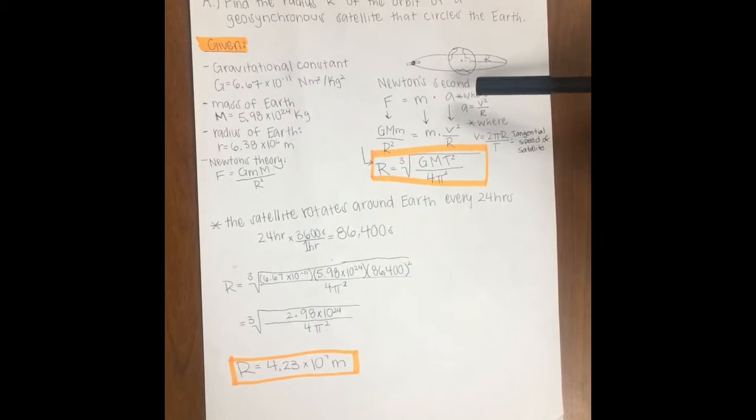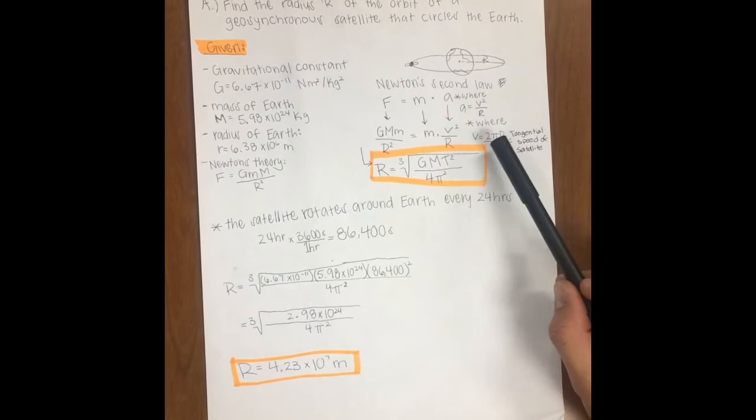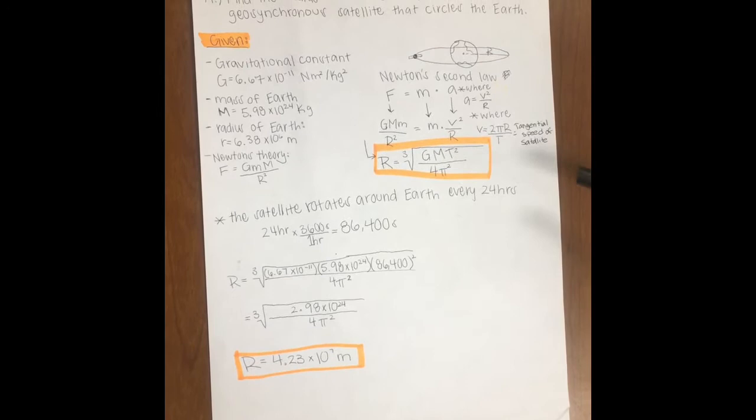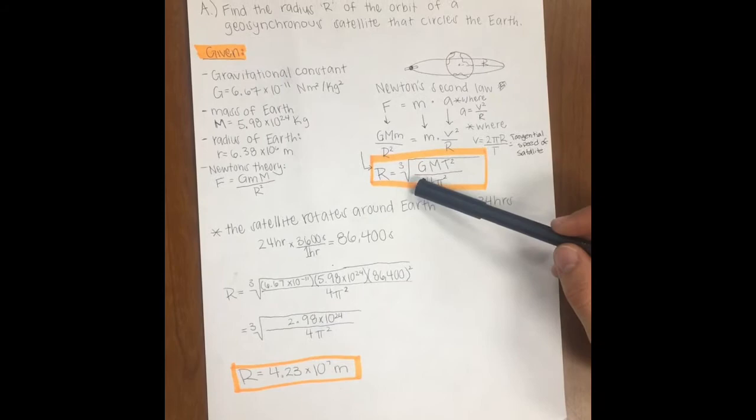Mass stays the same, and we know that acceleration is equal to v squared over r. We can also substitute v for 2 pi r over t, which is the tangential speed of the satellite. And so we compile all of these knowns from our different equations, and we isolate r.